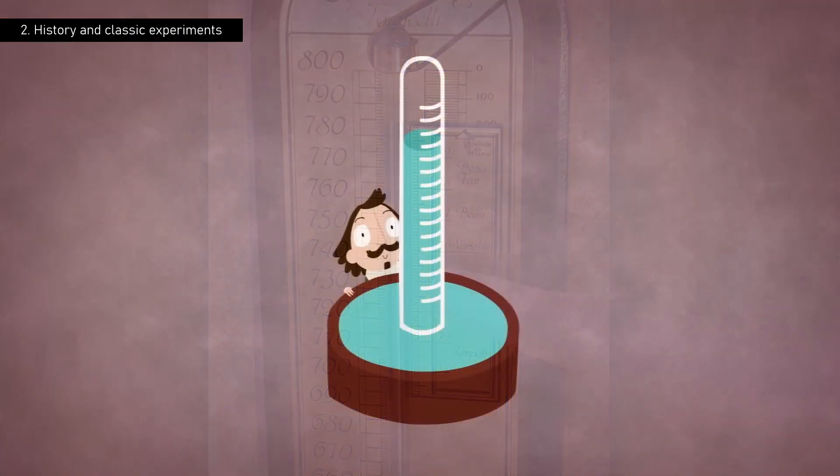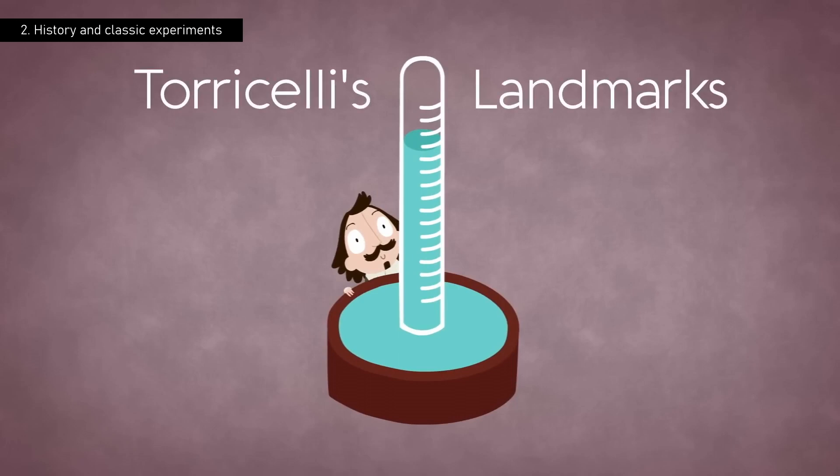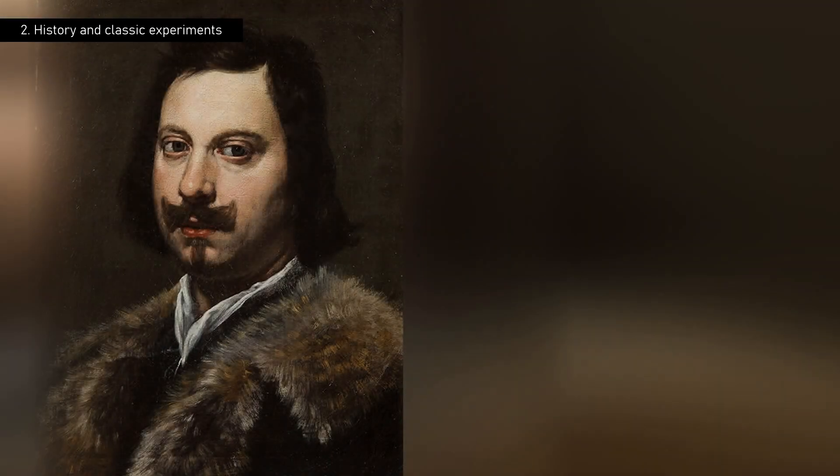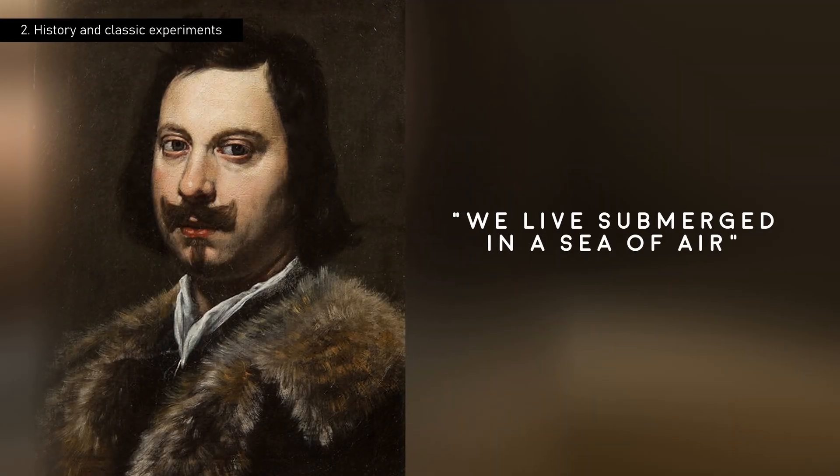Torricelli's experiment had several significant implications. It introduced the millimeter of mercury as a unit of pressure measurement. It led to the invention of the barometer, a crucial instrument for meteorology. And it inspired his famous phrase, 'We live submerged in a sea of air.'